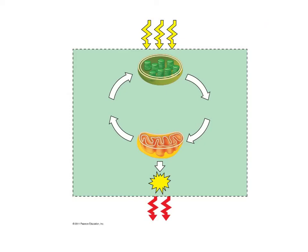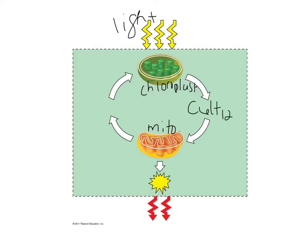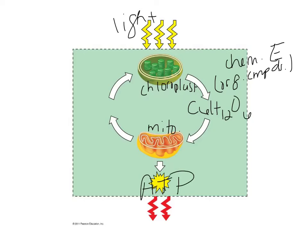Let's look at this energy flow diagram. We've got a chloroplast up here and a mitochondria down here. Light energy coming into the chloroplast gets converted into chemical energy — glucose, our organic compounds. That chemical energy then enters the mitochondria, releasing ATP, which is a form of usable energy.